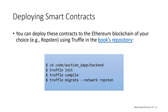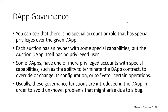You can deploy these contracts to the Ethereum blockchain of your choice, whether using a test network like Ropsten or others. Reading through the two smart contracts, you'll notice there's no special account or role with special privileges over the DAP. Each auction has an owner with special capabilities, but the auction DAP itself doesn't have a privileged user. This is a deliberate choice — not having a privileged user gives increased decentralization. Once you create it, you've relinquished control, and it just exists on the blockchain.